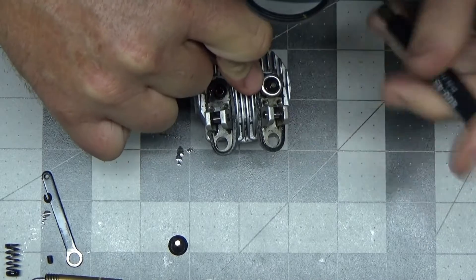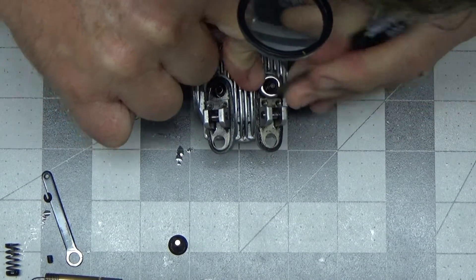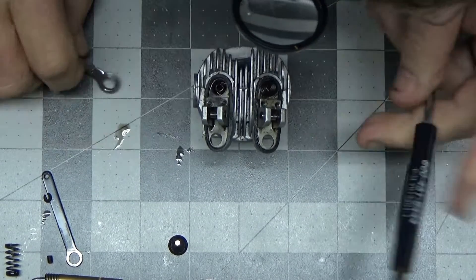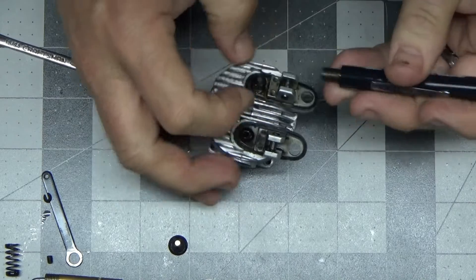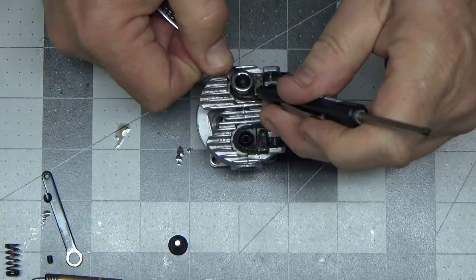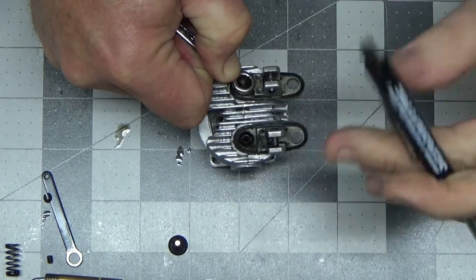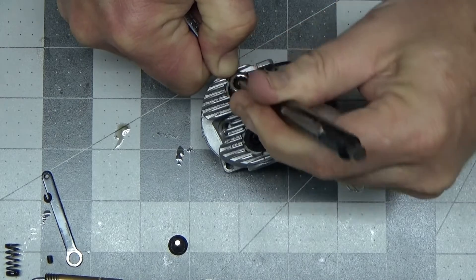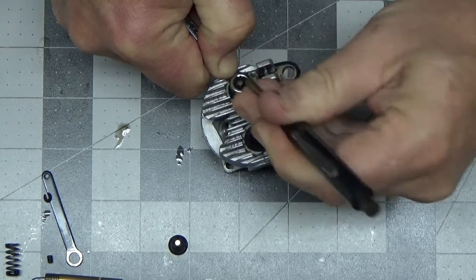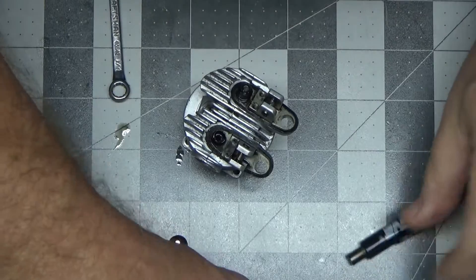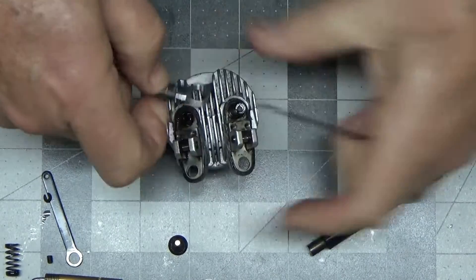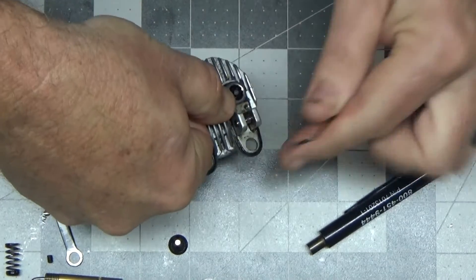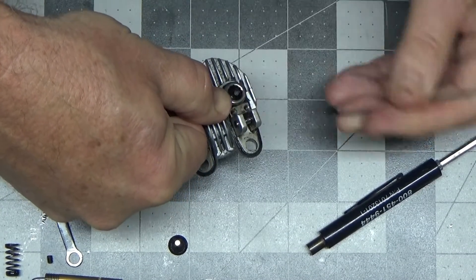This part is basically the same. You just get the keeper to come off, and you catch it with the magnet so it doesn't go flying all over the place. But both of these keepers are kind of giving me trouble today. Let me try and use this thing here. Okay, there we go.